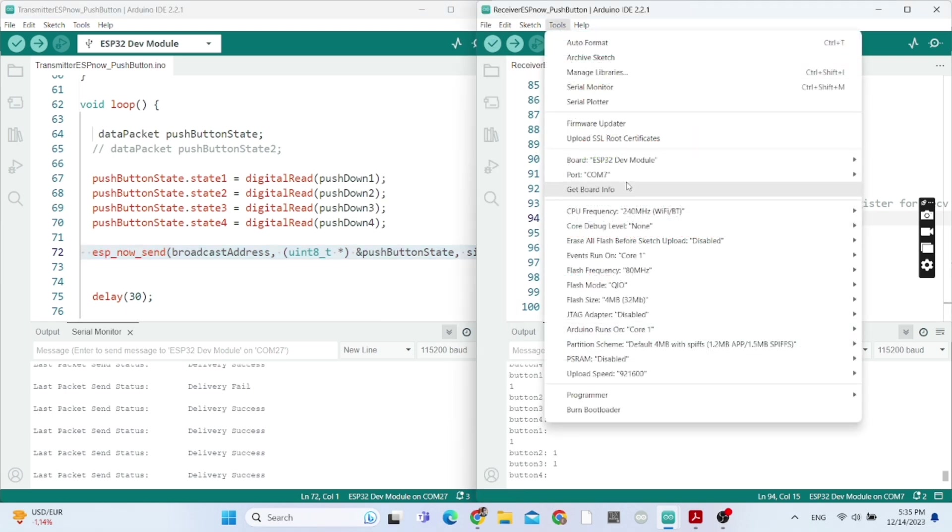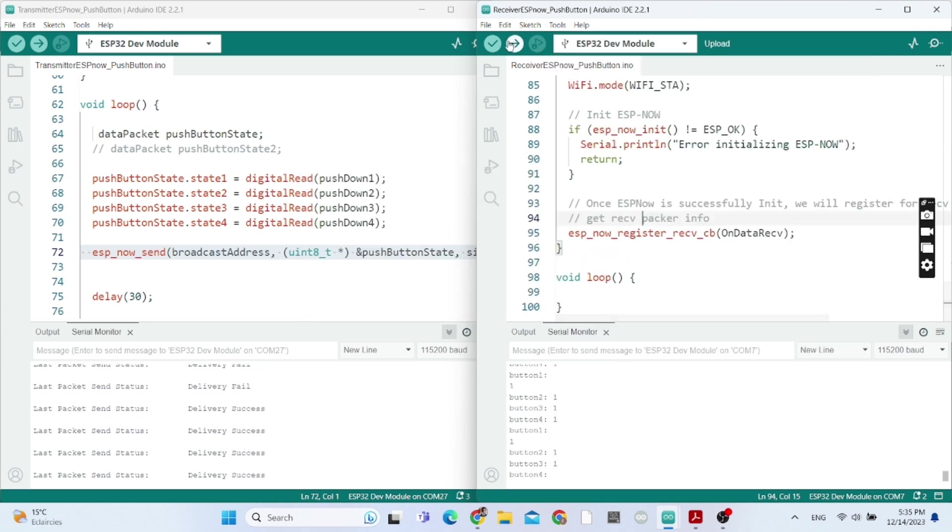So now you can upload the code to your boards. You choose the right port and the right board. For me it's ESP32.